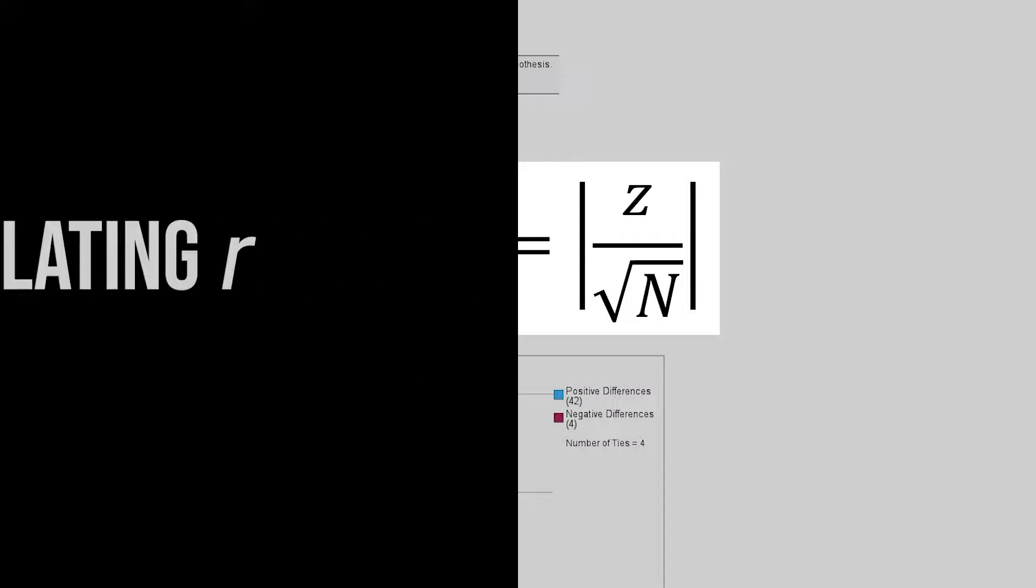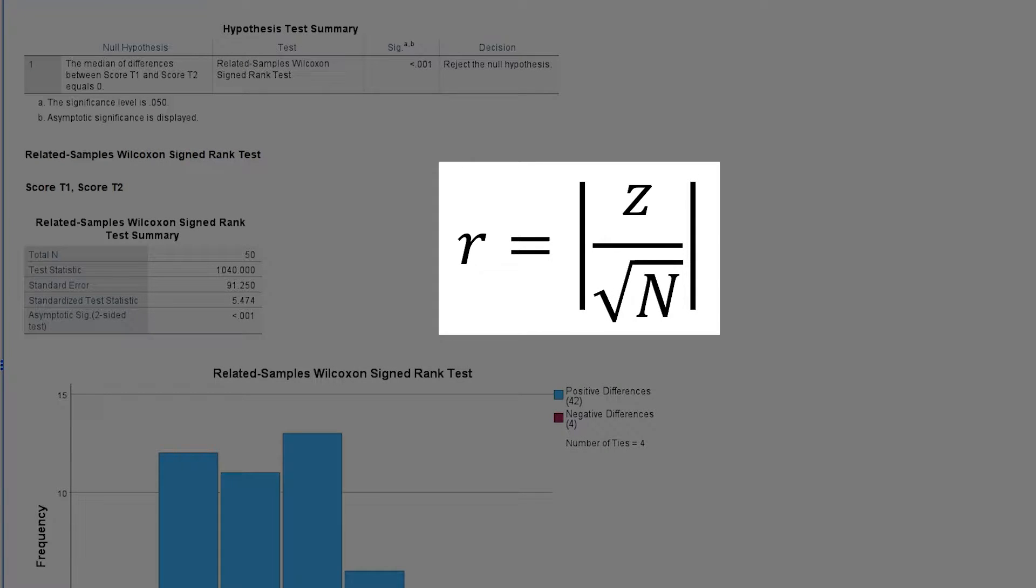However, to calculate the effect size r, a simple division is sufficient. For r, you need to divide the absolute value of the standardized test statistic z by the square root of the number of observations.